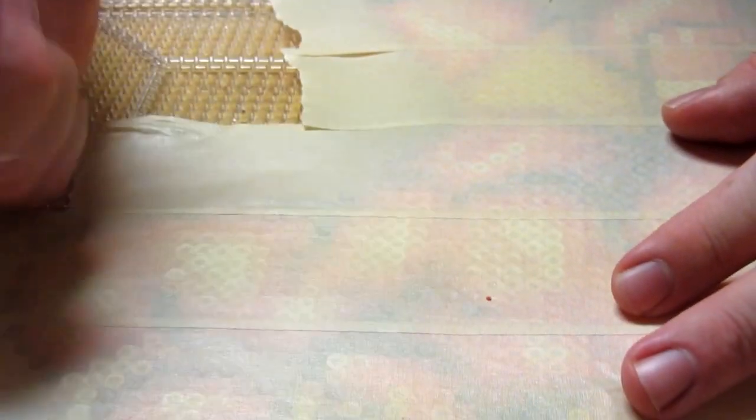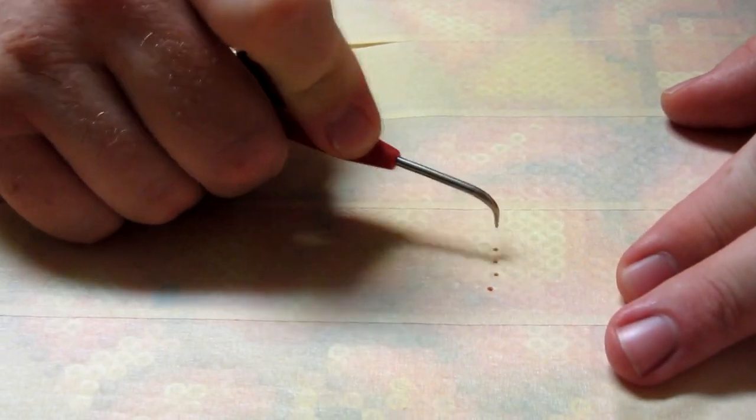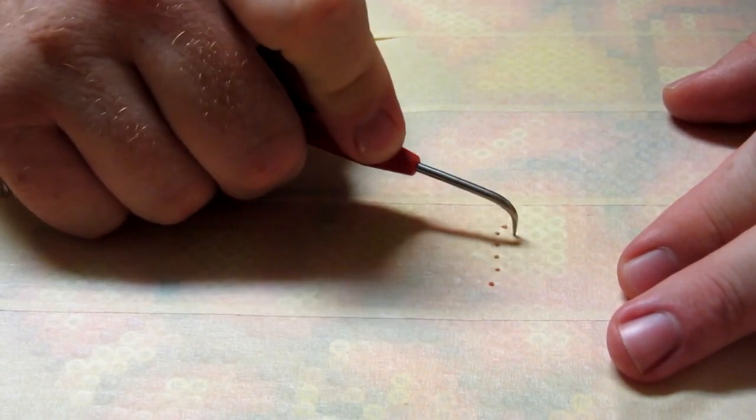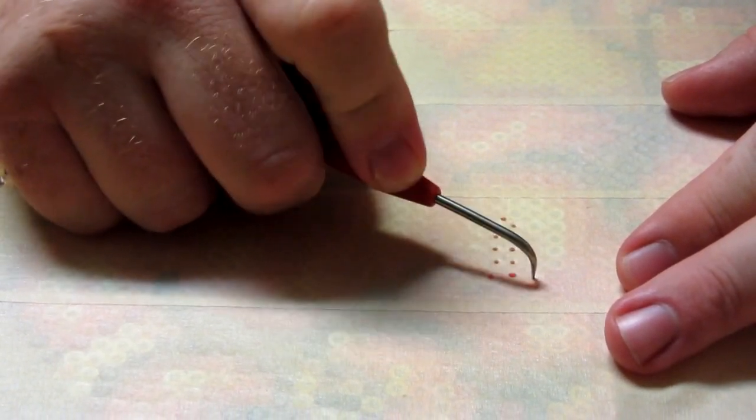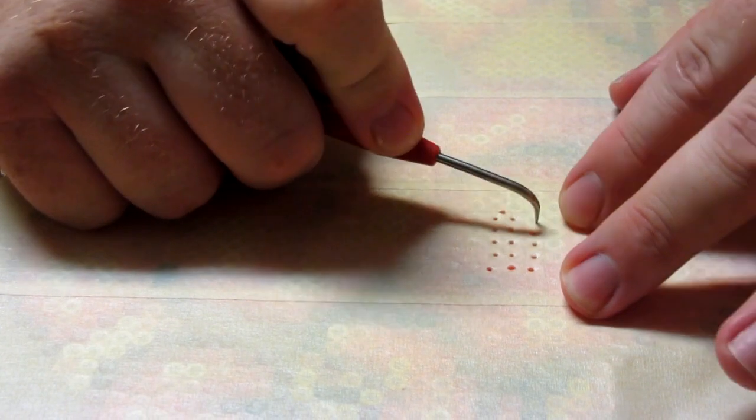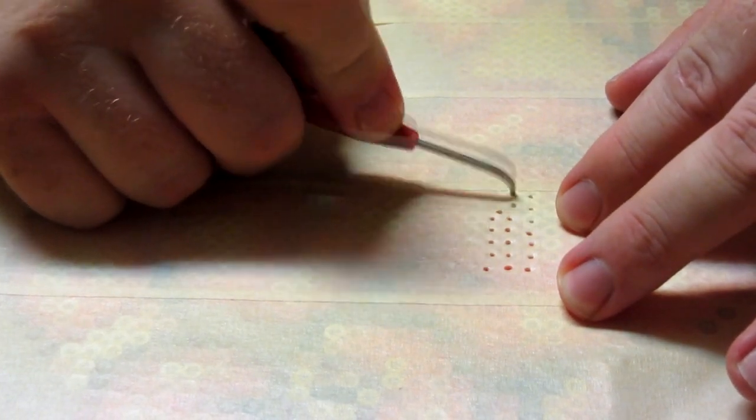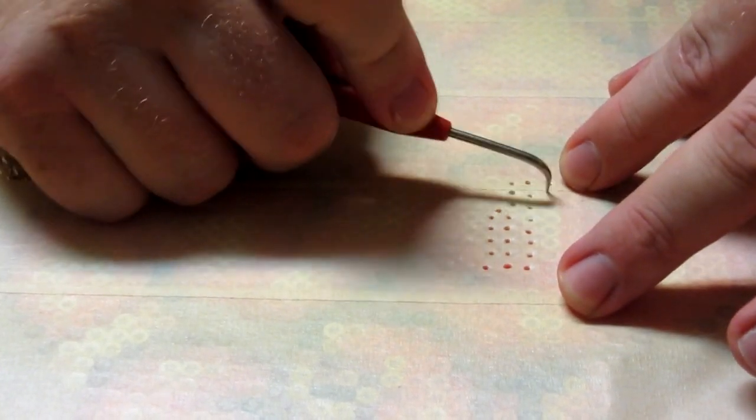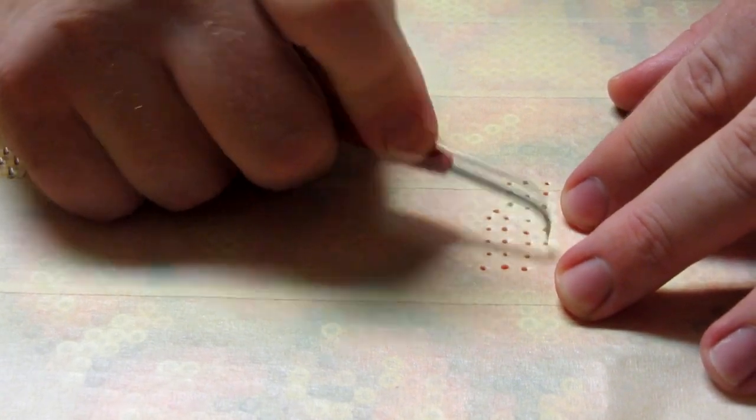So take your loom tool, poke, poke, poke, poke. You get in between, that's okay. This is a lot like popping bubble wrap. Just go at it. You can do it on the board.